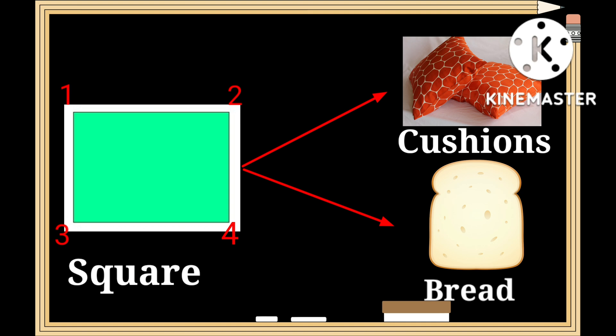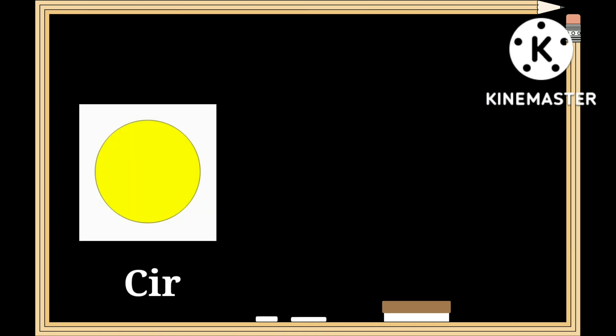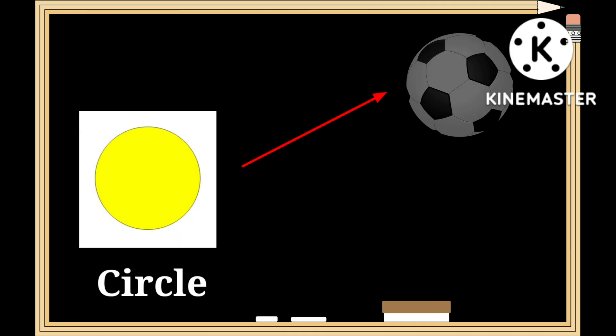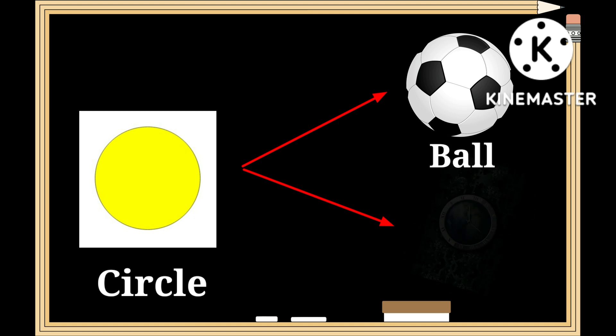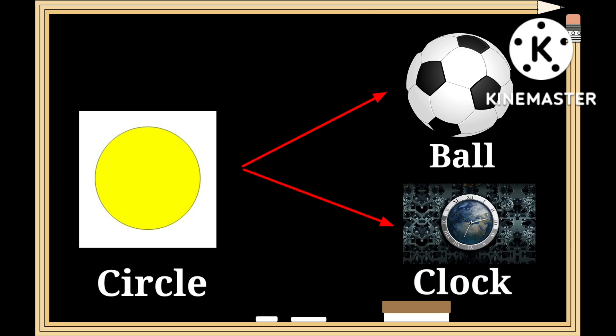This is a shape of a square — s-q-u-a-r-e. It has four edges. As you can see, the shape of cushions and bread have a similar shape to that of a square.